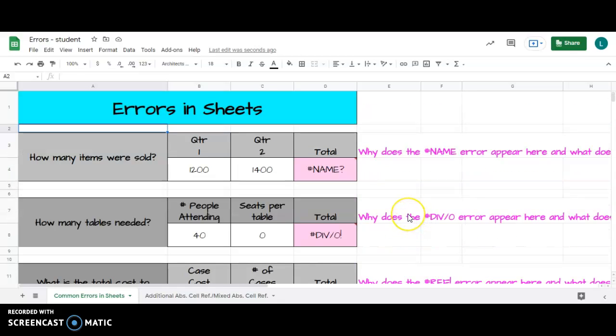So let's go through and fix them. How many items were sold? It's supposed to be an addition problem. So if you double-click here, B4 plus C4, but if you notice there's an A at the end.